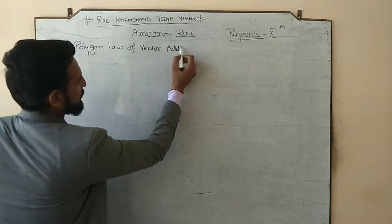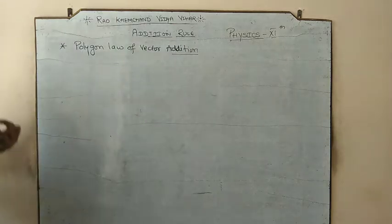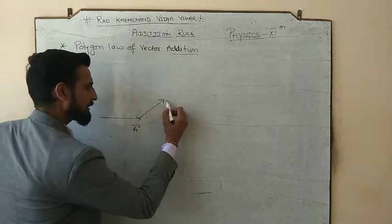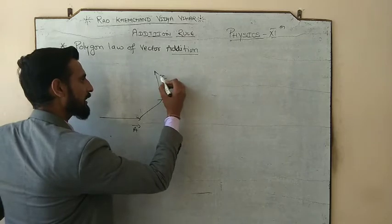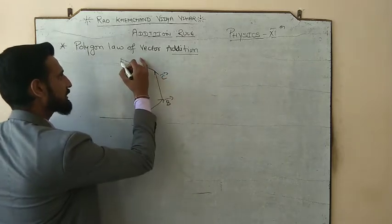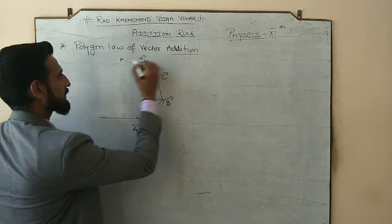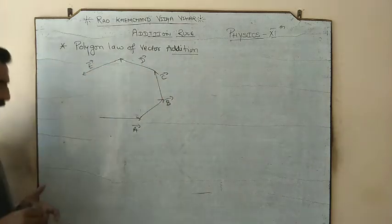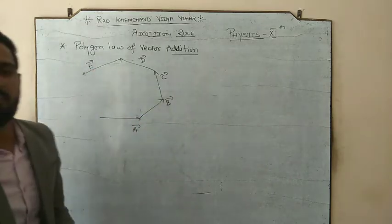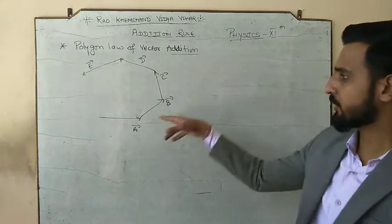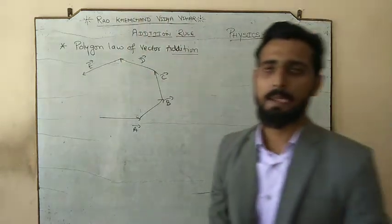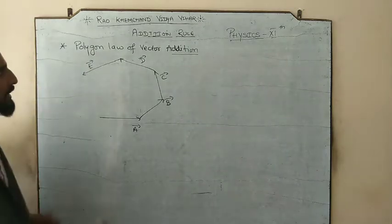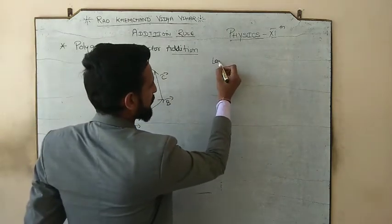What is the polygon law of vector addition? Let's suppose I have vectors: a vector, b vector, c vector, d vector, and e vector — 5 vectors which are connected from head to tail in sequence. What is the resultant of all the vectors? The polygon law says: if n−1 number of vectors are connected as the sides of a polygon of n sides, then the resultant of all vectors would be given by the side closing the polygon.